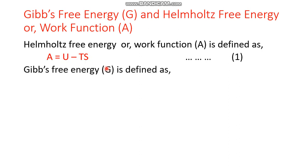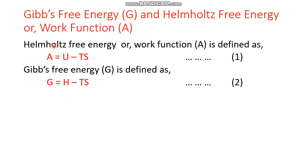The free energy at constant pressure is the Gibbs free energy, which is the difference of enthalpy and the product of temperature and entropy. All of them have the dimension of energy and both of them are state functions.